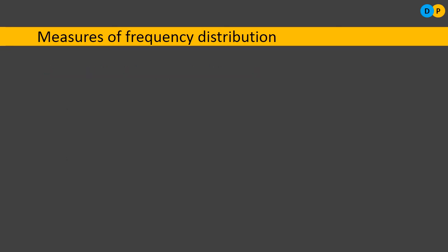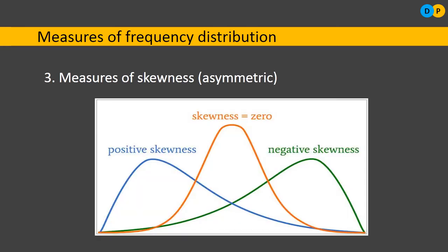The third measure is measure of skewness. Skewness can also be termed as asymmetry. After plotting the frequency distribution in graphical form, it might take a symmetrical form — where dividing the graph gives two equal halves — or it can be a positive skew or a negative skew.